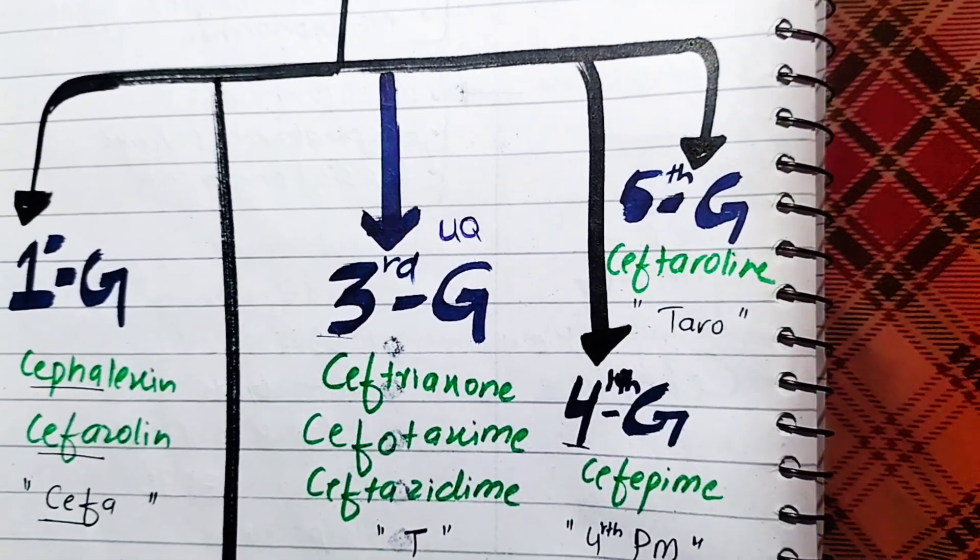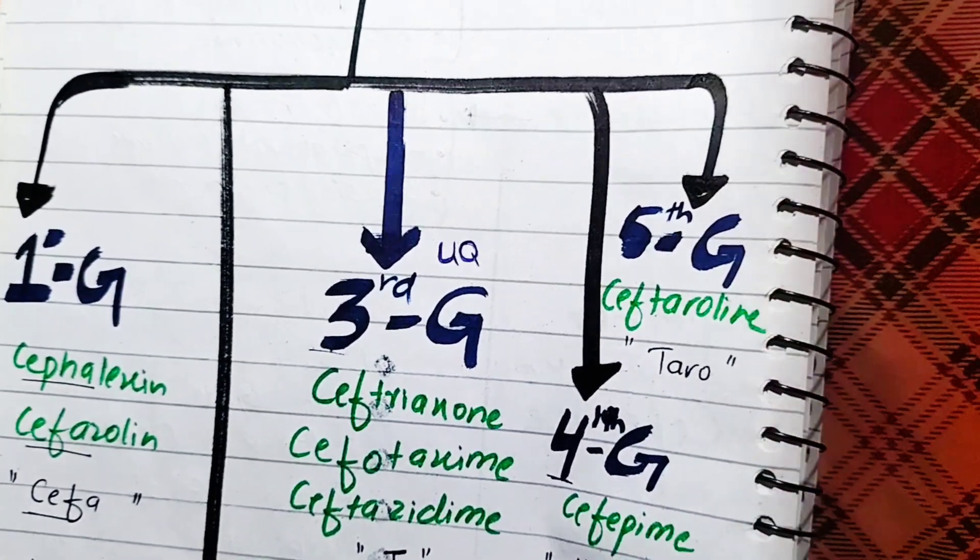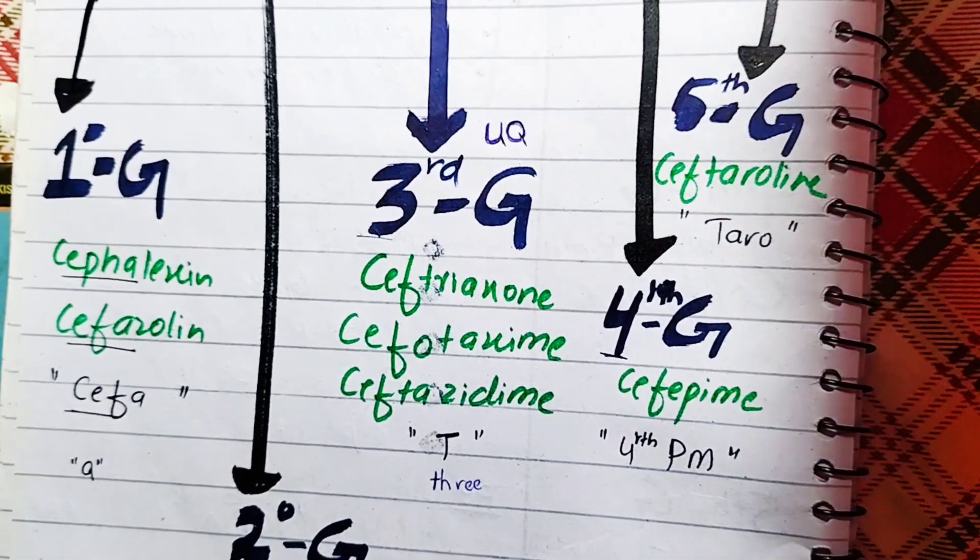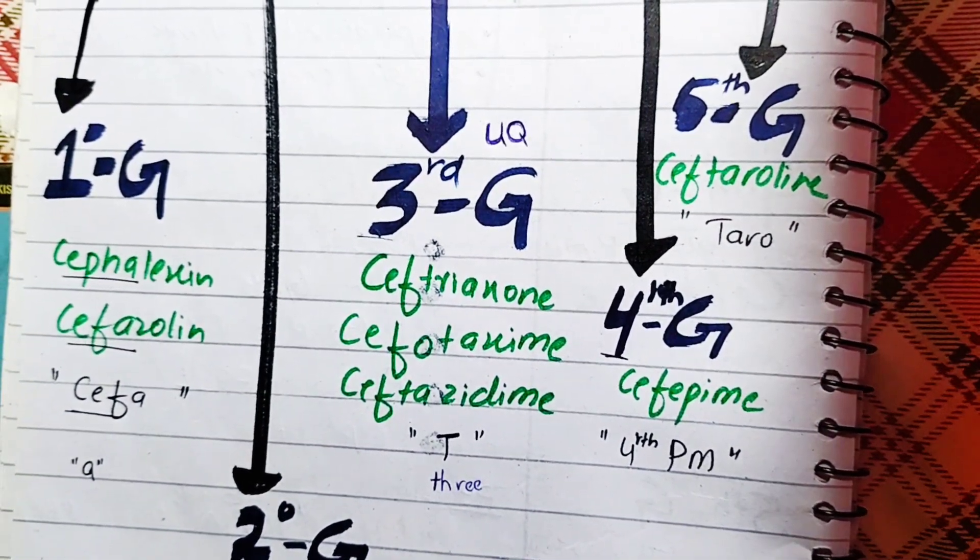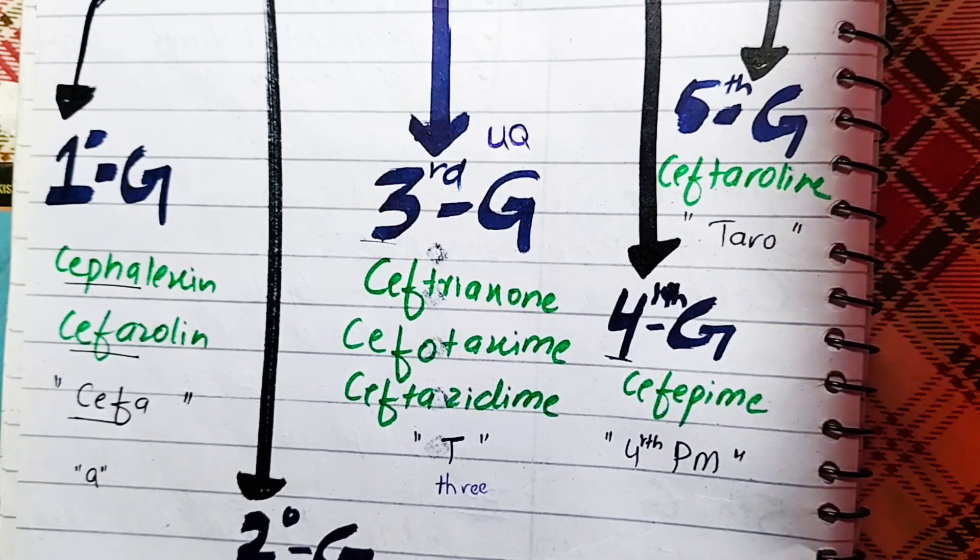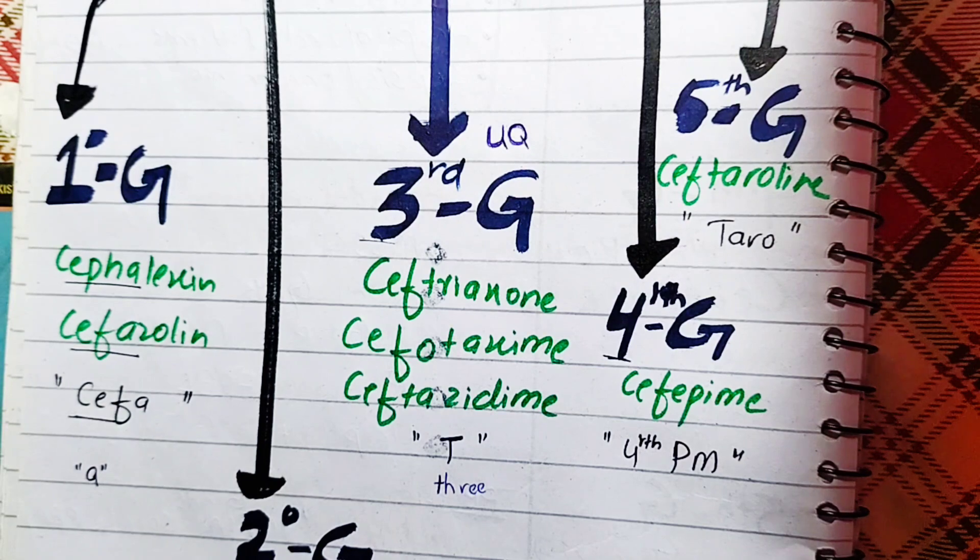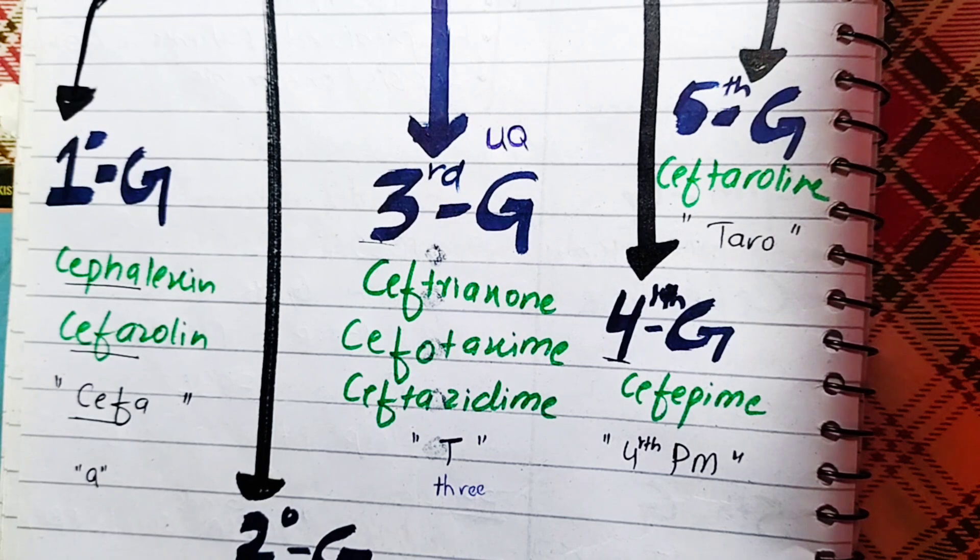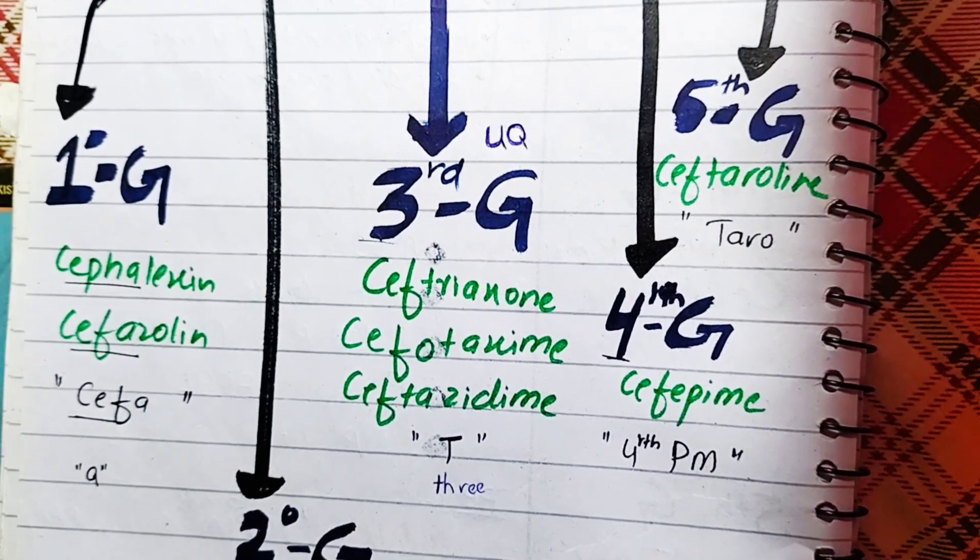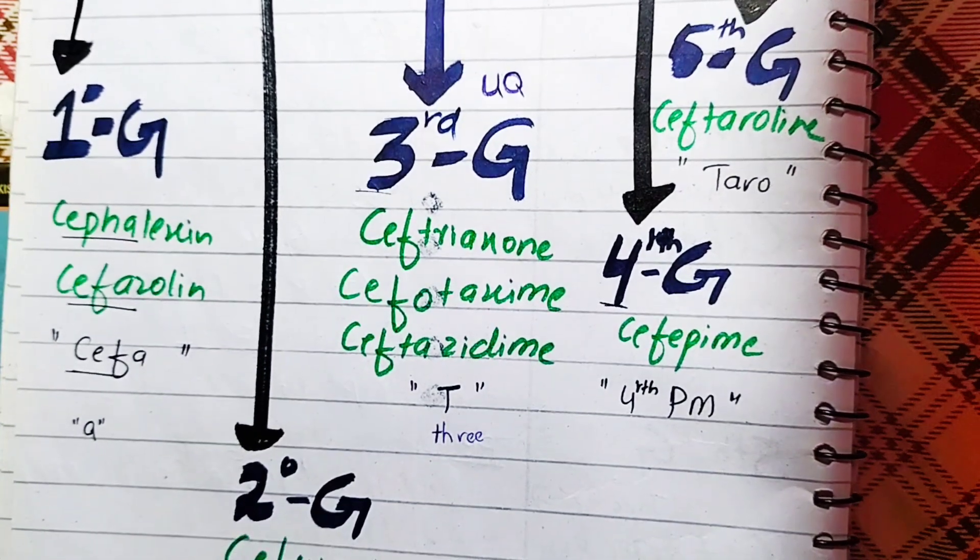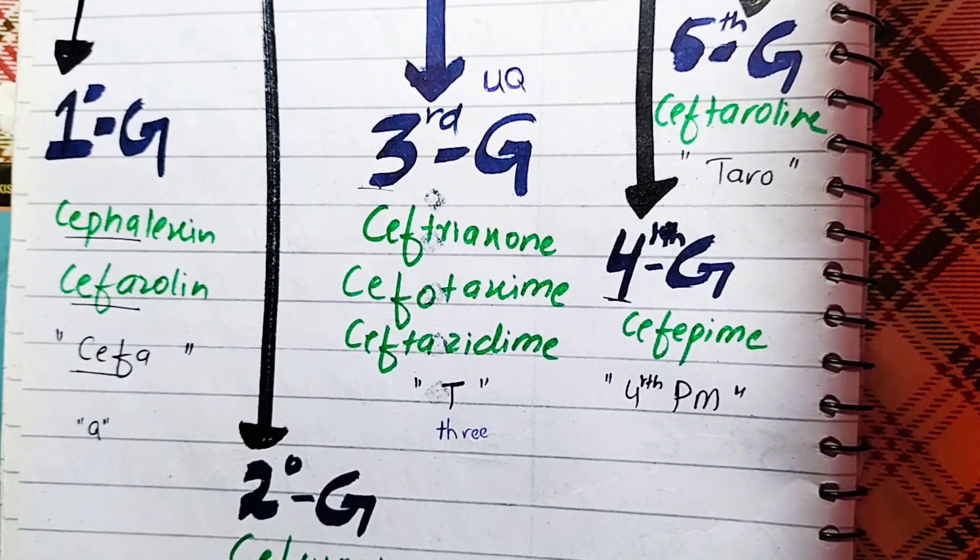Cephalosporins is cell wall synthesis. It is very important. I have made it very easy for you. It is 5 generations: 1, 2, 3, 4, and 5 are very important. At least in every group you should have a name. I have made it very small which will be easily 4 or 5 groups.